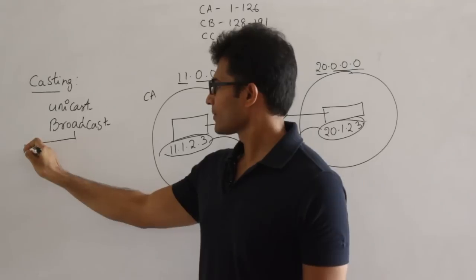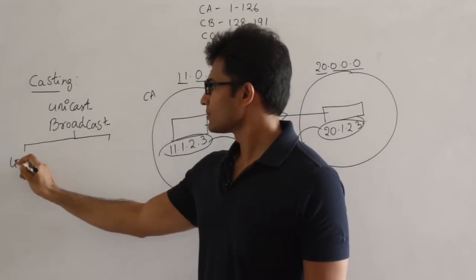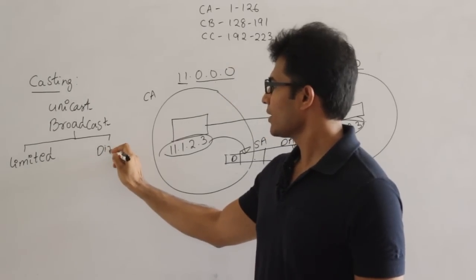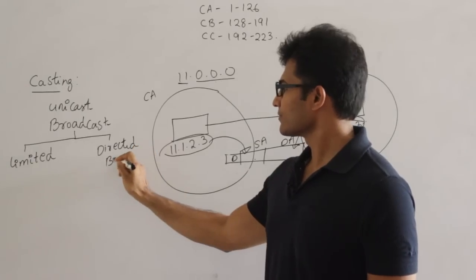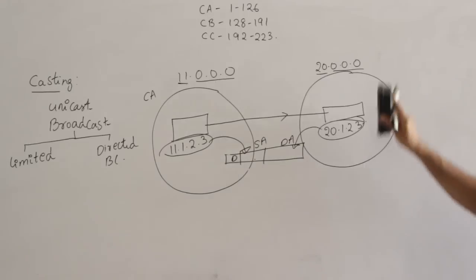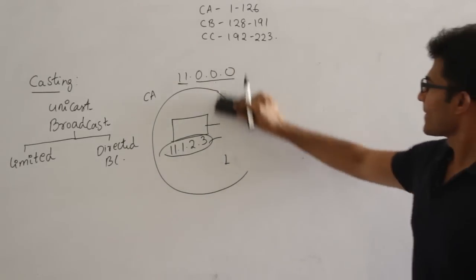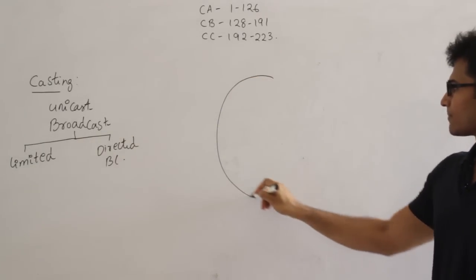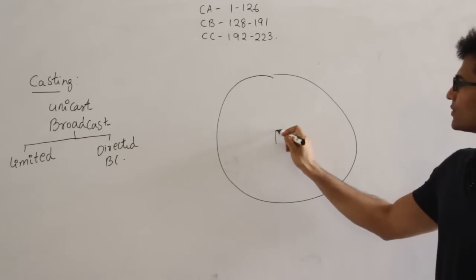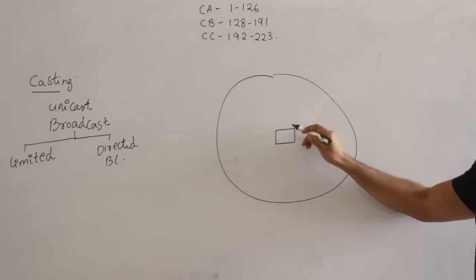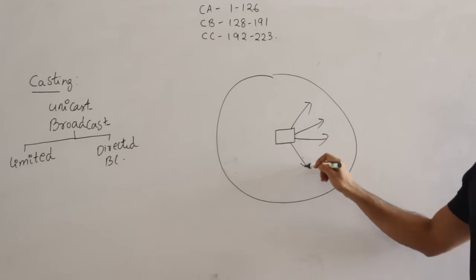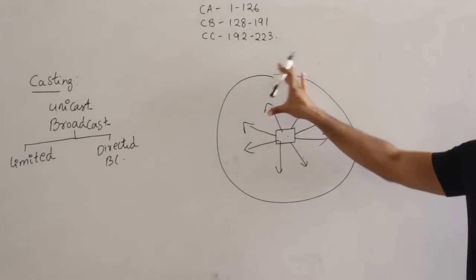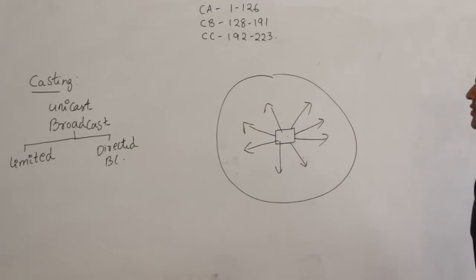Now we see what broadcasting is. There are two types: limited broadcasting and directed broadcasting. Limited broadcasting is when a host wants to send a message to all the other hosts in the same network.